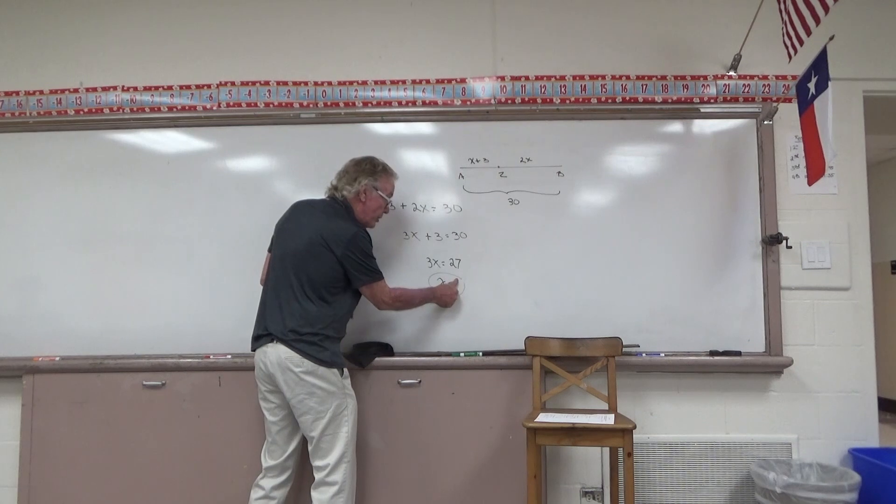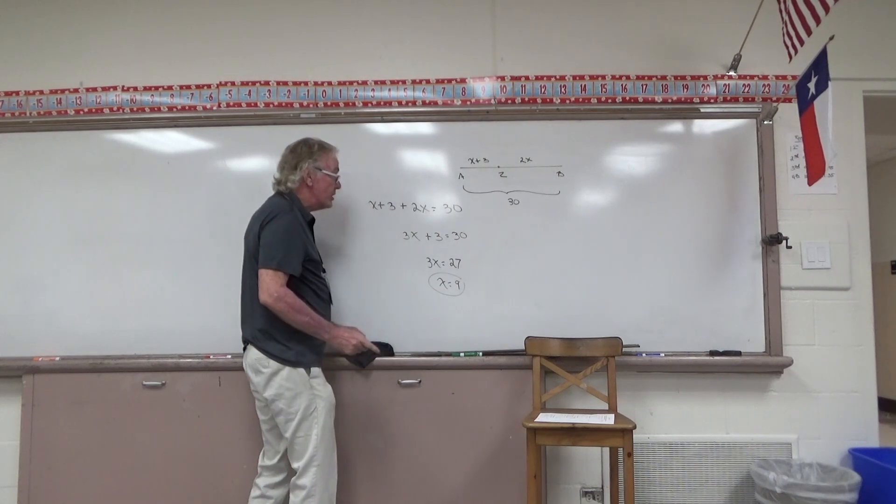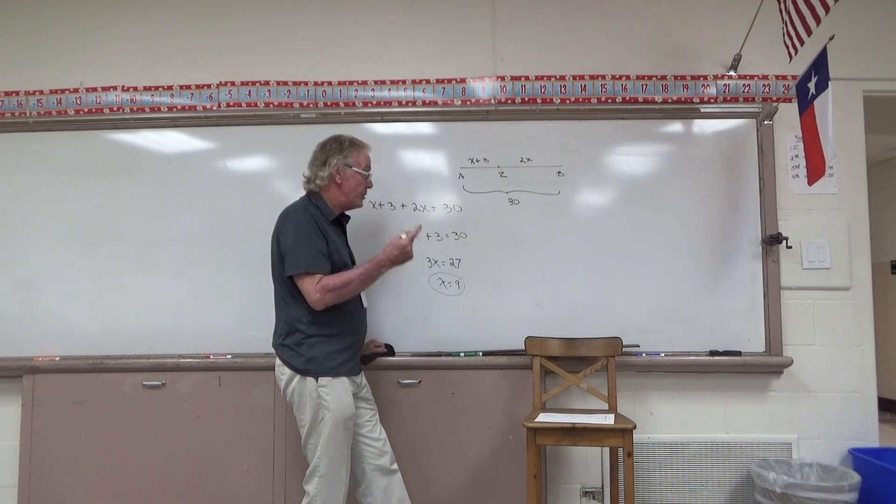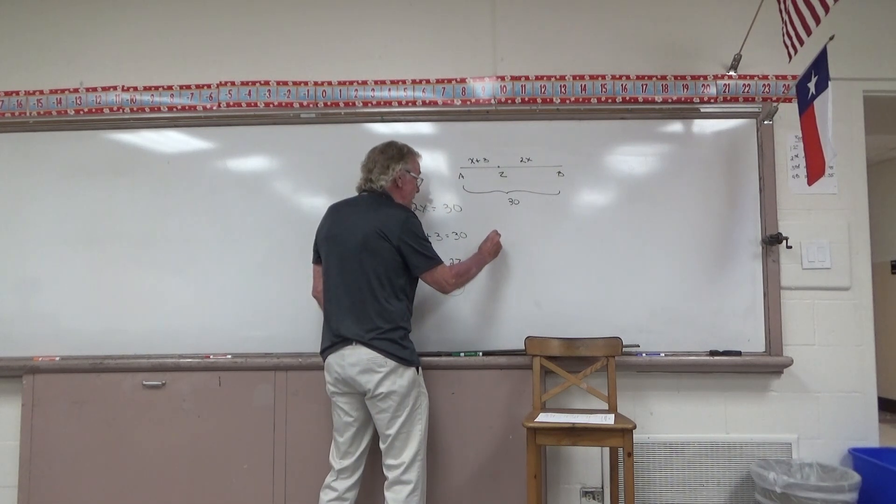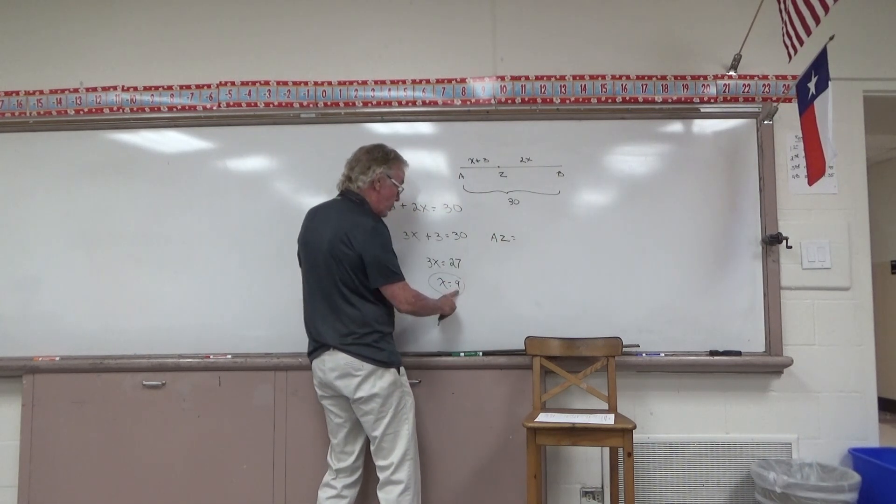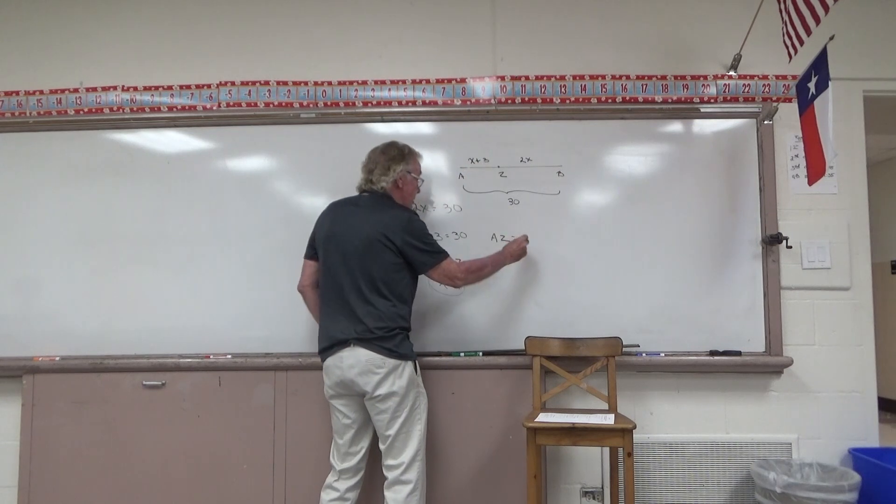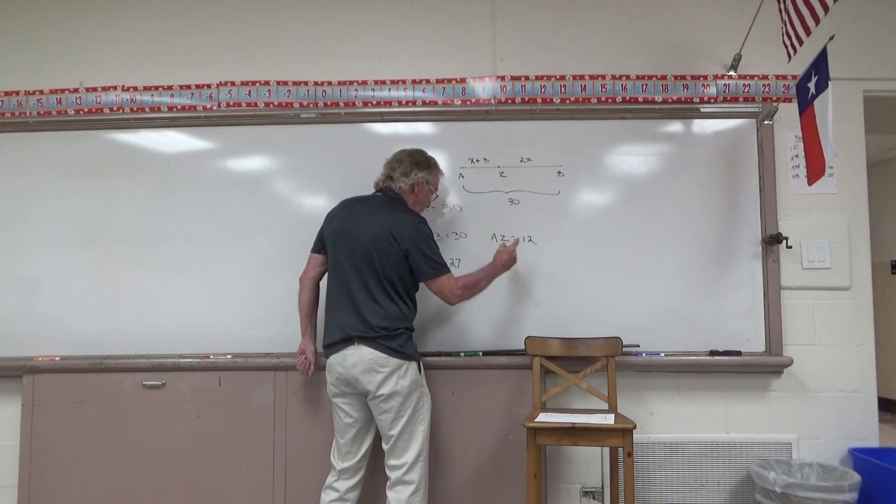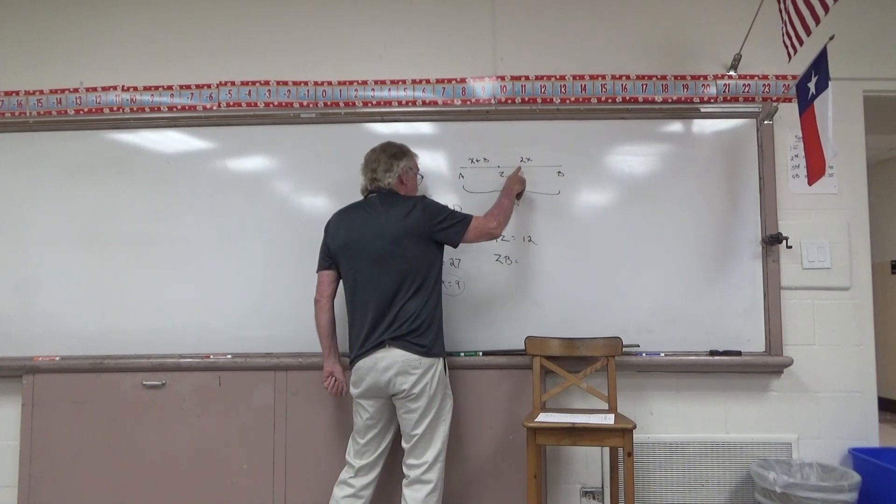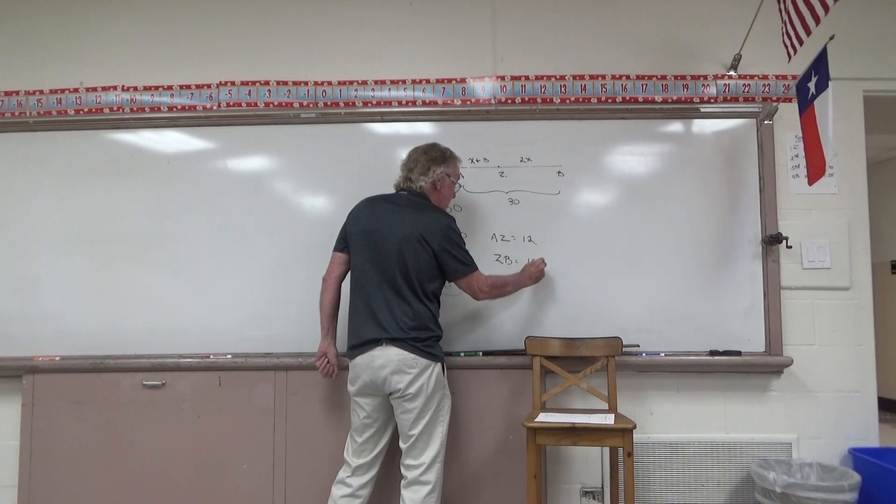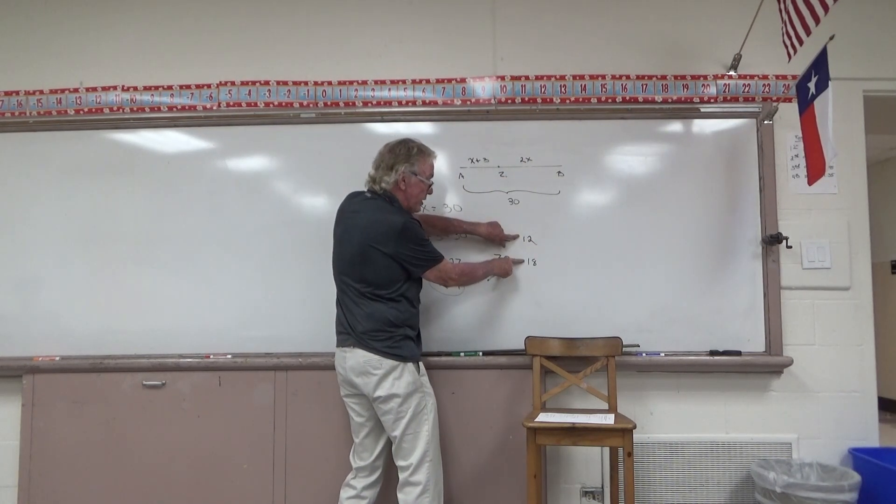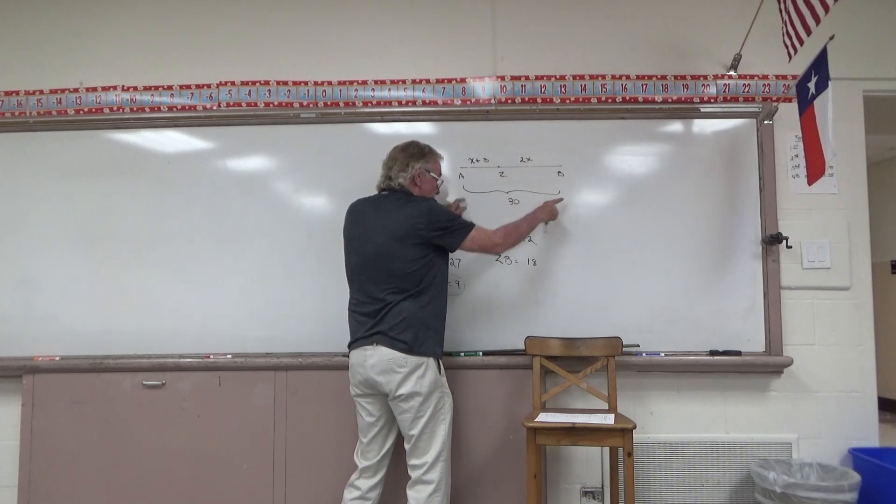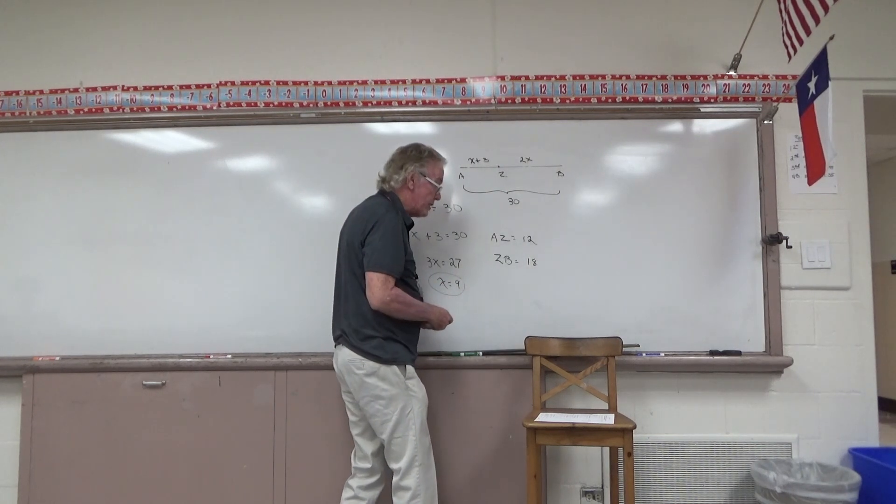You can write more, but you don't have to write more. If X is equal to 9, I'm not quite finished. I should show the lengths of these various segments. AZ, if X is truly 9, 9 plus 3 is going to be 12. And ZB, if X is 9, must be 2 times 9, therefore 18. And I'm happy, because I see that 12 and 18 adds up to the full length of 30. So I'm working this as it should be done.